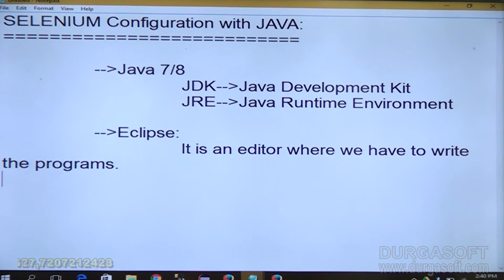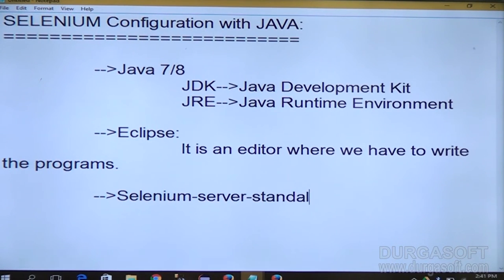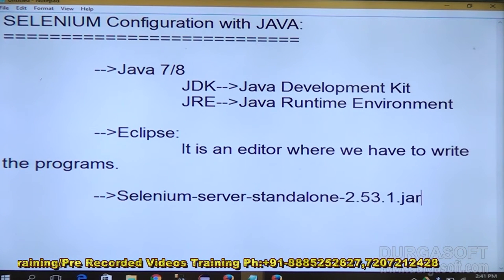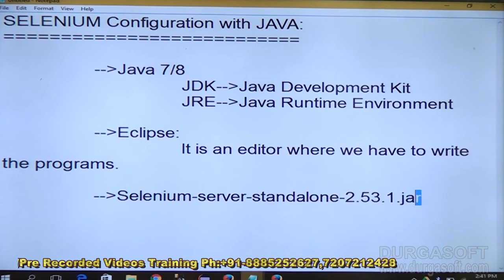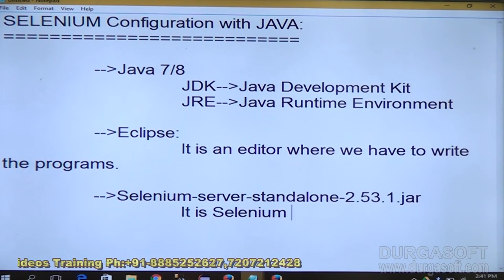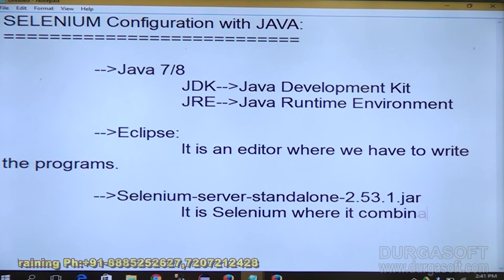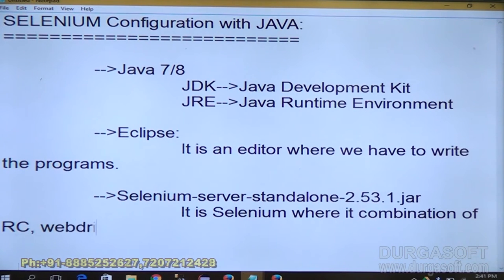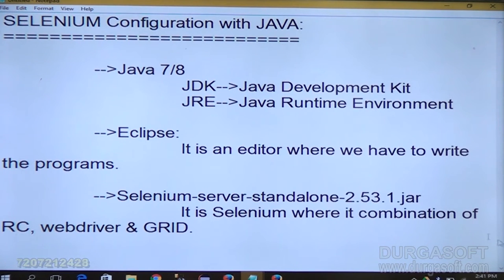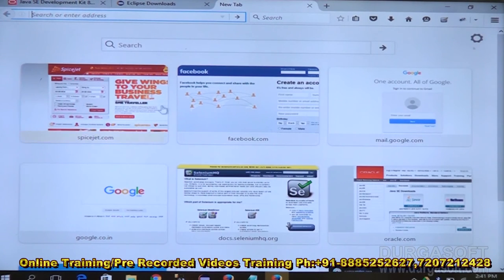Third — and this is the main thing — Selenium Server Standalone. I am using version 2.53.1 JAR file. JAR means Java Archive file. This is the Selenium file, the combination of RC, WebDriver, and Grid. They released Selenium 3 beta version last week, but it is not a complete version. Presently we are using 2.53.1 JAR file. Go to SeleniumHQ.org and click on Downloads.